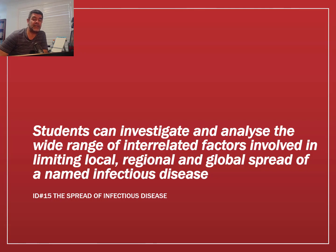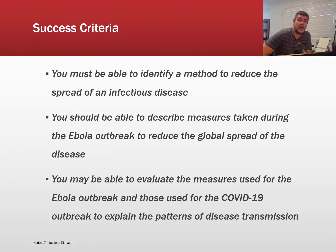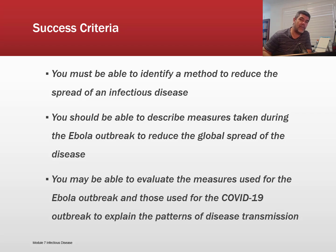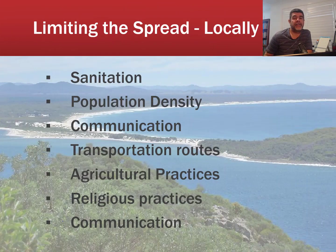To set the context, we want to investigate and analyse a wide range of interrelated factors involved in limiting local, regional, and global spread of a named infectious disease. You need to at least be able to identify a method to reduce the spread of infectious disease, and describe measures taken during the Ebola outbreak. Because of what we've all been through in the last 12 months or so, being able to evaluate the measures used for Ebola and apply those to what we have done to combat COVID-19 may be a useful way of putting what we learn into practice. We'll look at each of the levels and examine general strategies for combating any particular infectious disease.